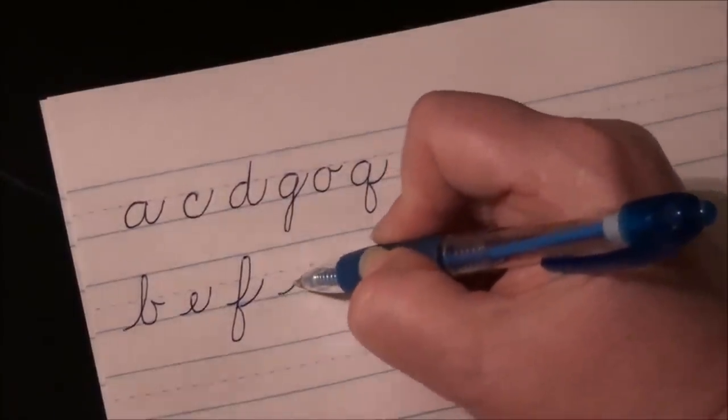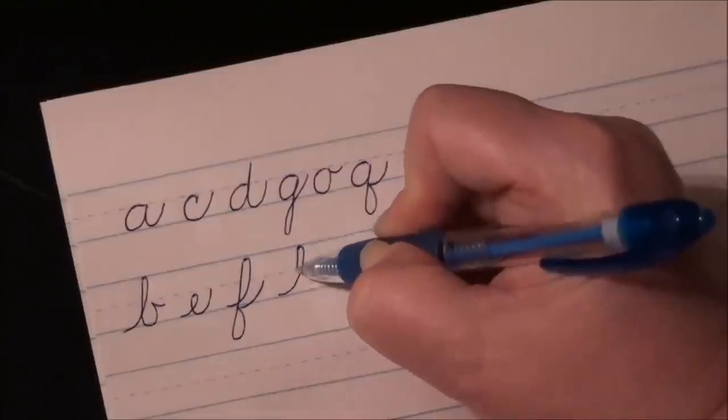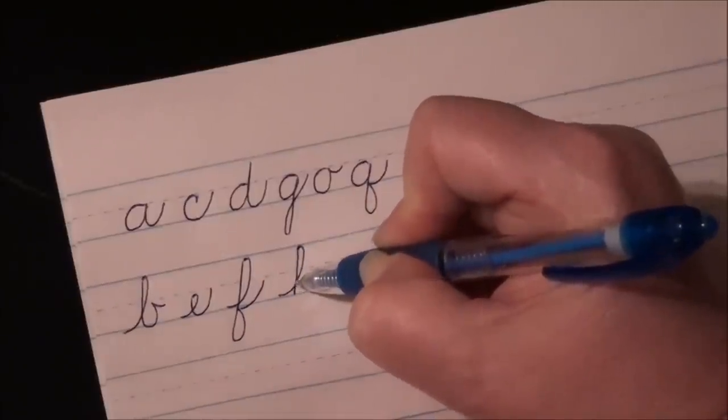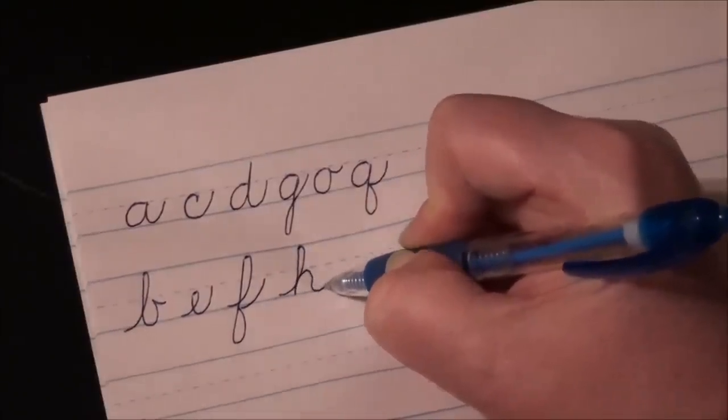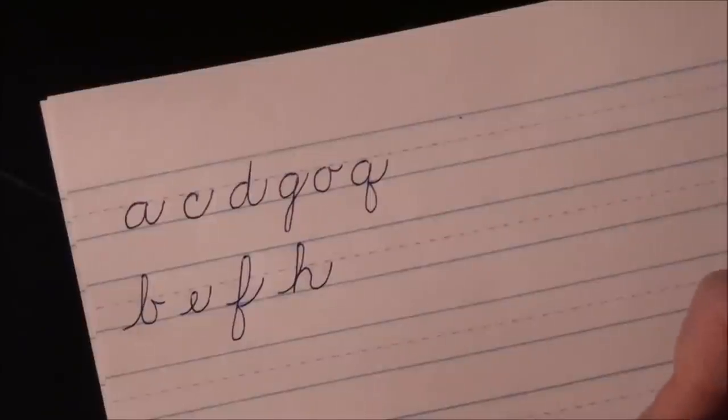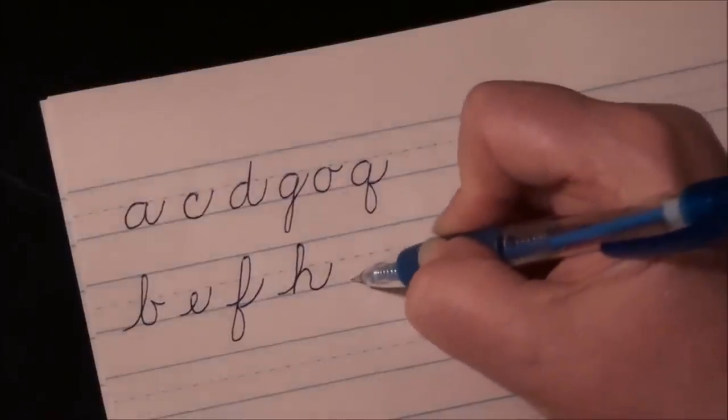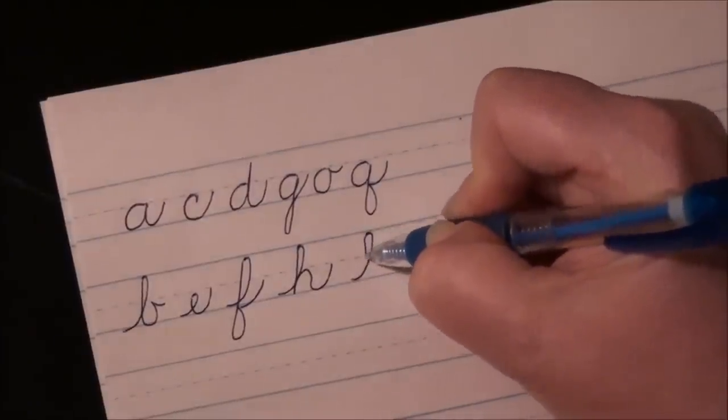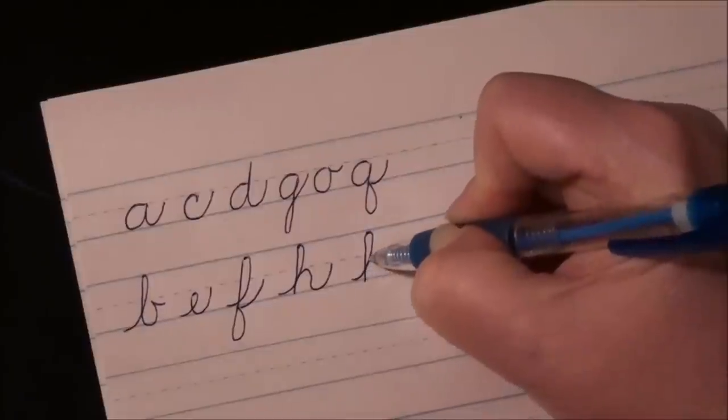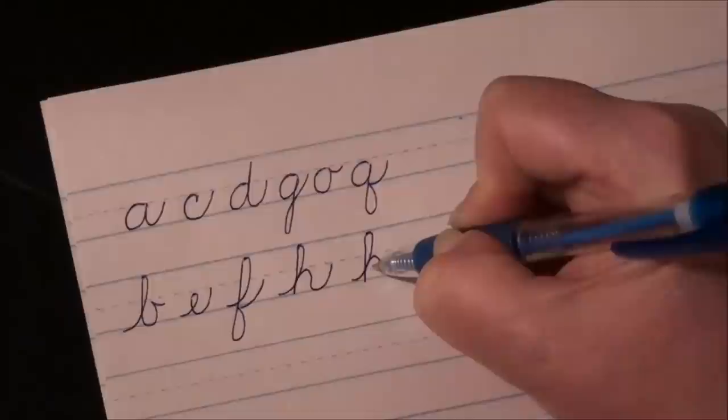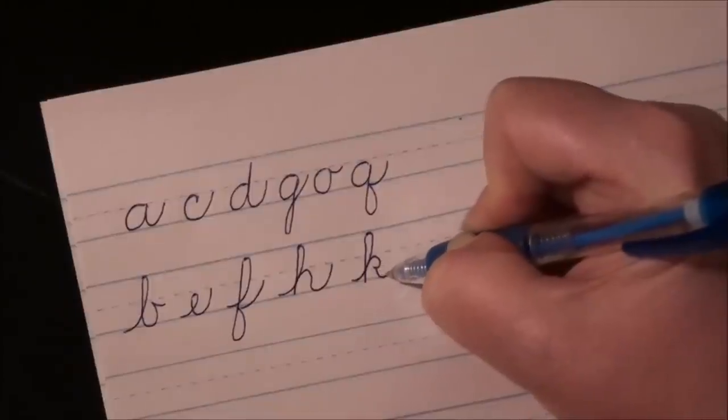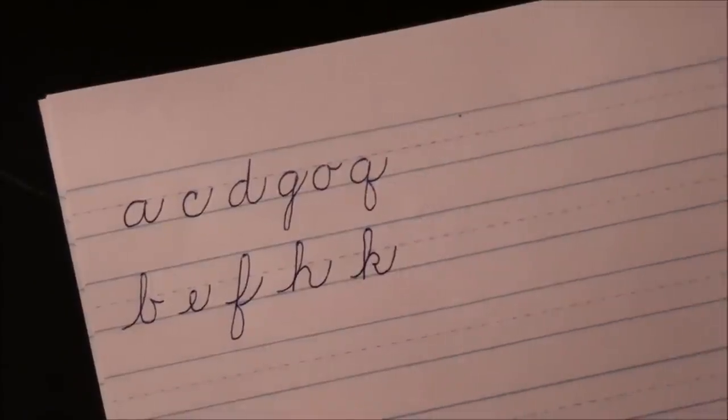H, nice tall loop to the headline, down to the baseline, retrace, make your hump and your K. Hump, tuck it in, come down to your baseline, and your tail back up to your midline.